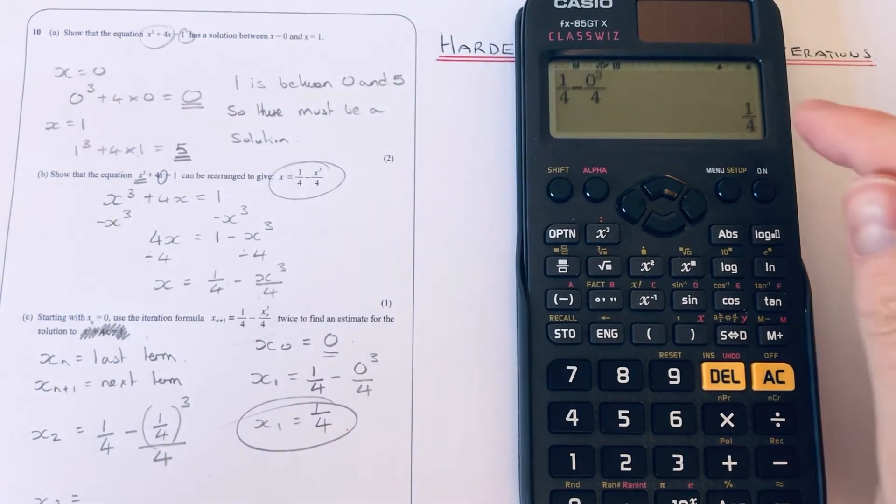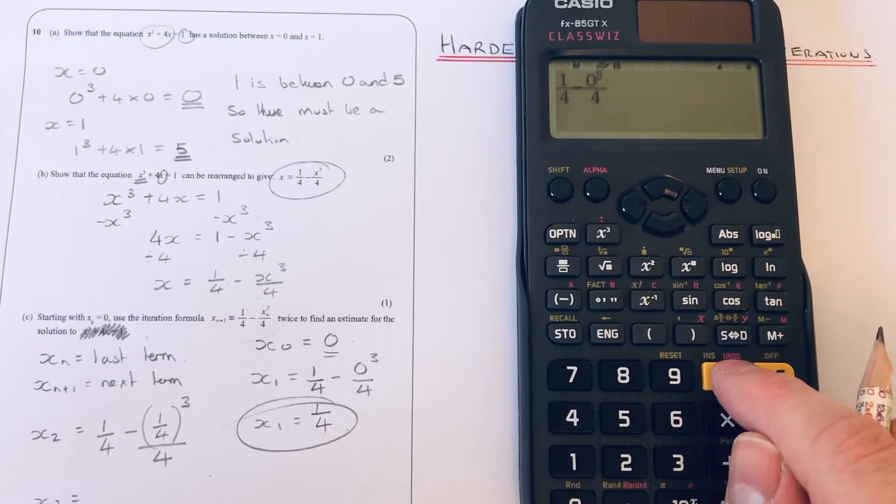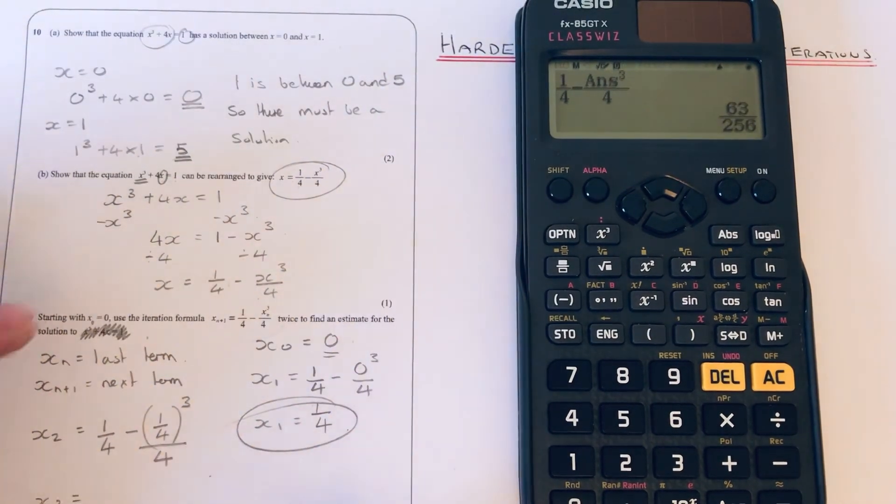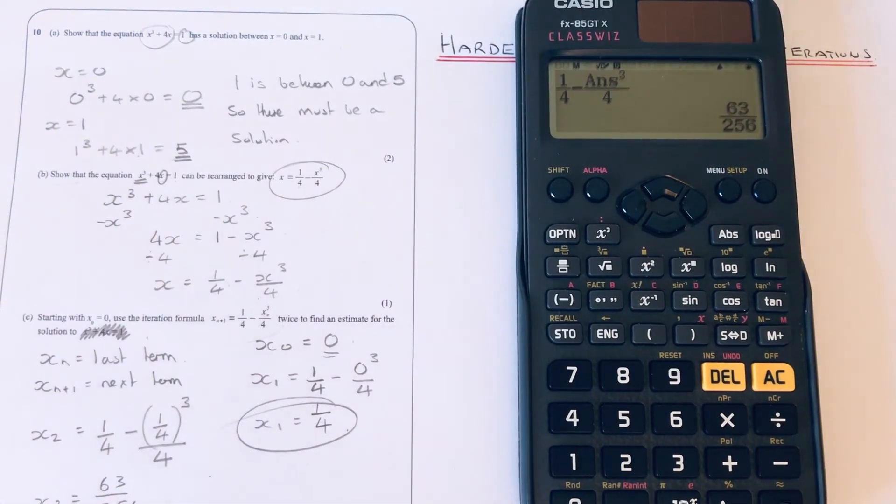So we can now just edit what we've just got here, so we can change that 0. I can just press the answer key because a quarter is stored in memory, and we get our next answer which is 63/256. So that is our second term.